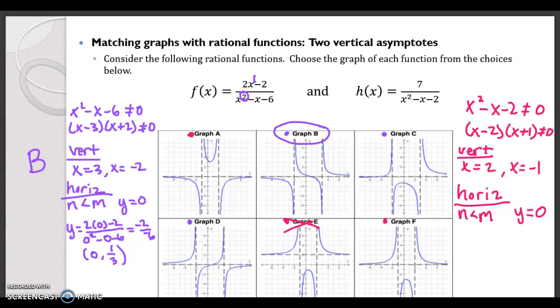Well, if I find the y-intercept, if it's positive, it'll be graph A. And if it's negative, it'll be graph F. So the y-intercept happens whenever x is 0.